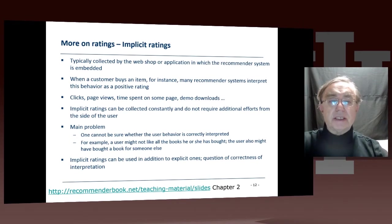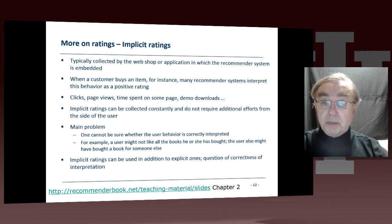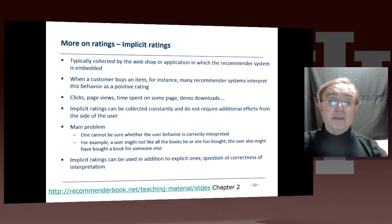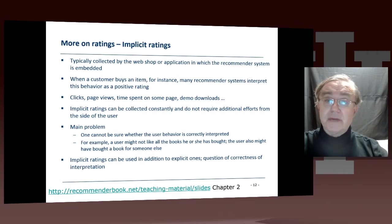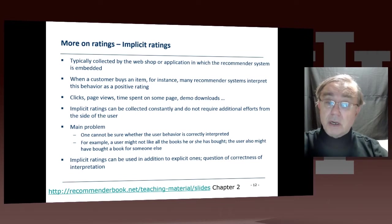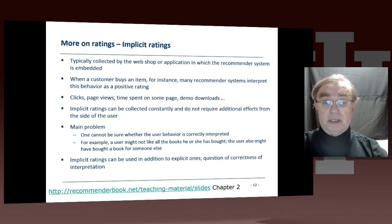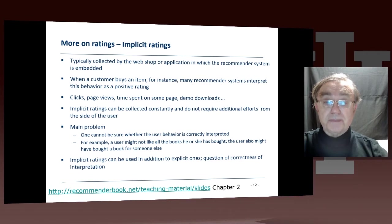There are also implicit ratings. Namely, if you buy something, that's presumably a signal — though not necessarily positive, since you may hate it after you bought it. There are things like how long you spend on a page, which pages you've visited, and what things you download. These are all implicit ratings, and the advantage of them is you don't actually have to persuade the user to do anything.